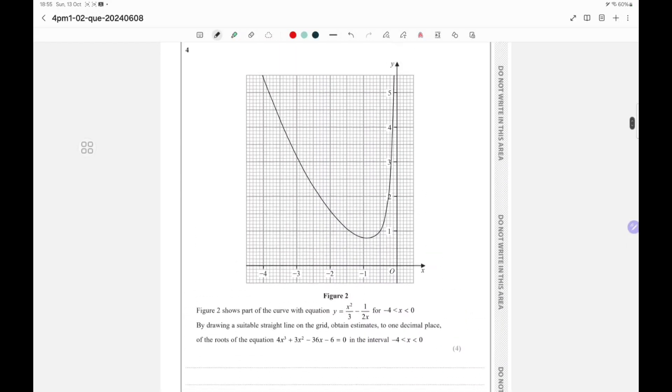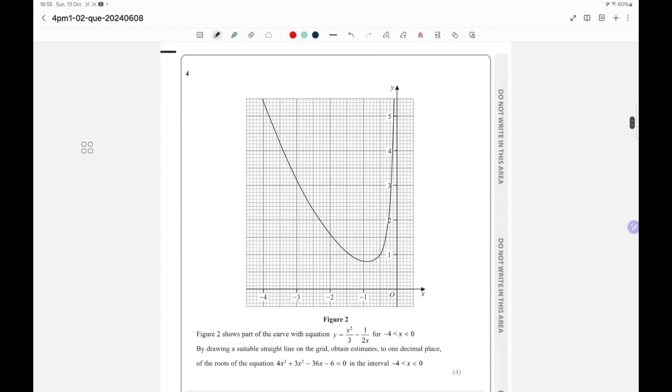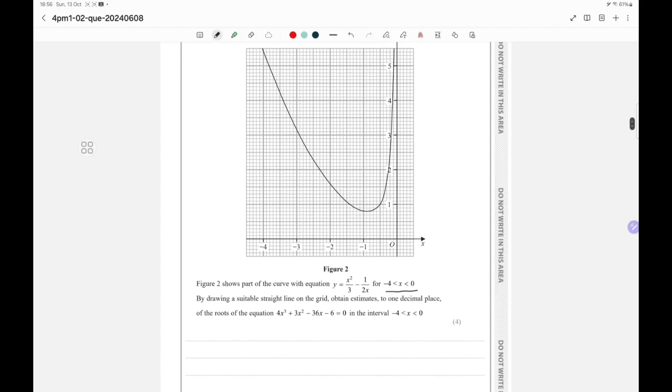Welcome to another video. This is May 2024 paper 2 question number 4. Figure 2 shows part of the curve with equation y equals x squared divided by 3 minus 1 by 2x for this domain. By drawing a suitable straight line on the grid, obtain estimates to one decimal place of the roots of the equation 4x cube plus 3x square minus 36x minus 6 equals 0.